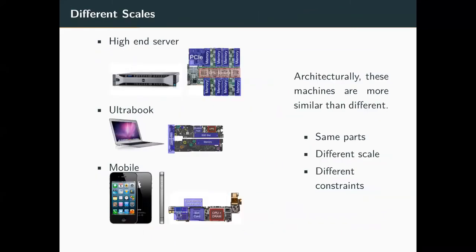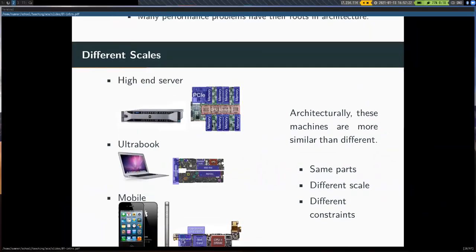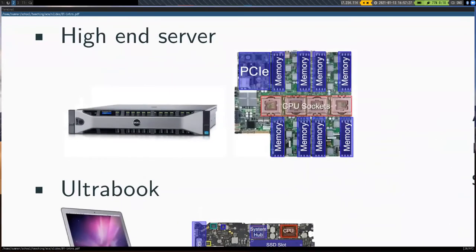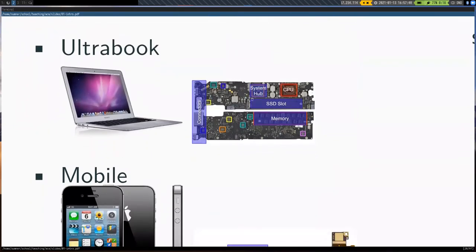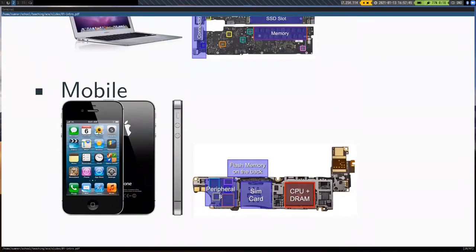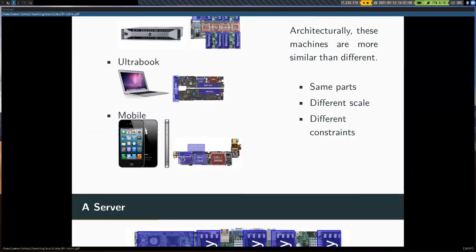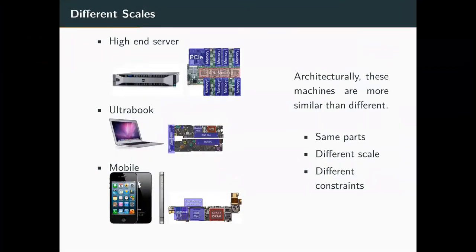The architecture of most machines you'll ever deal with are pretty much the same — there are a lot of similarities. Here we have a high-end server on a rack in a data center, an ultrabook, and a mobile device. Different scale, same parts: we're still going to have a processor and memory. We have different constraints though — you don't have to worry about sound in a data center the same way you do on an ultrabook, and you definitely don't want a fan in your iPhone.